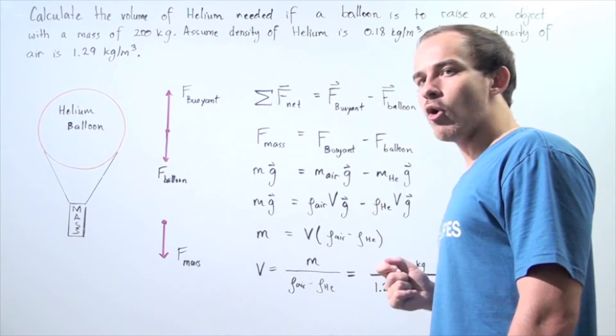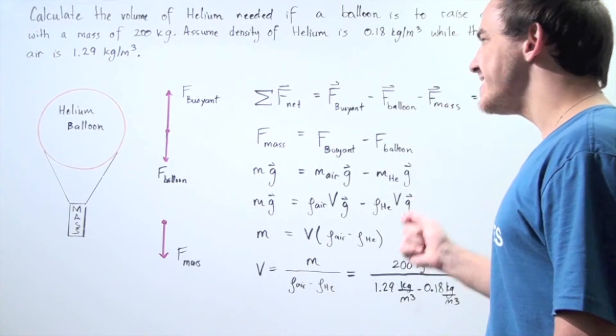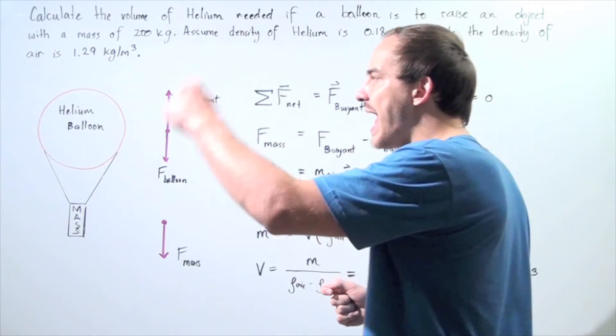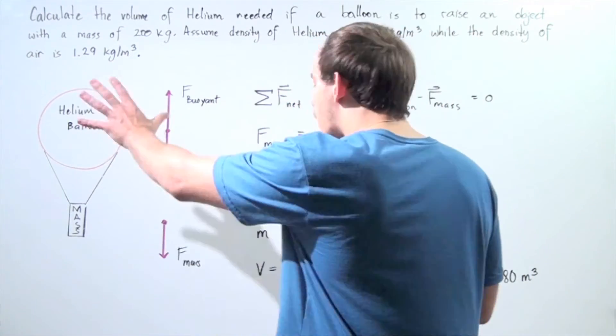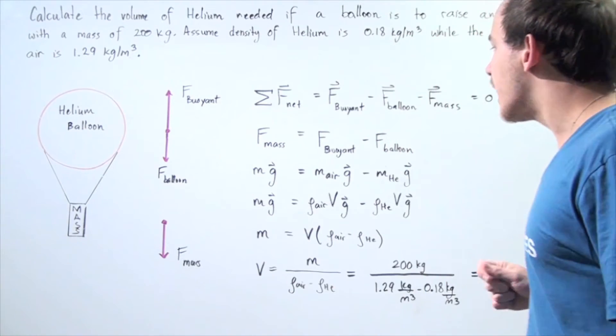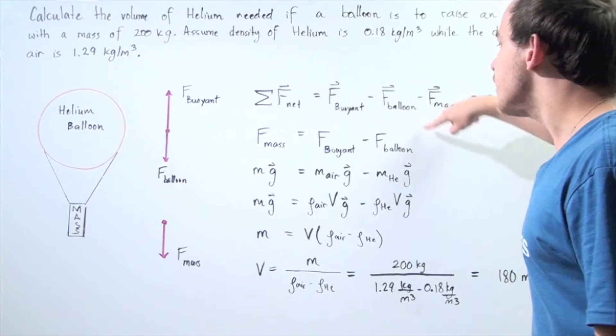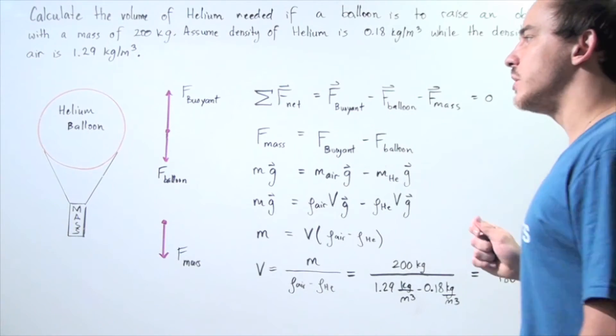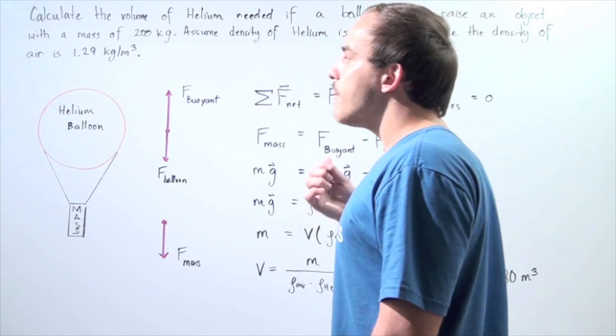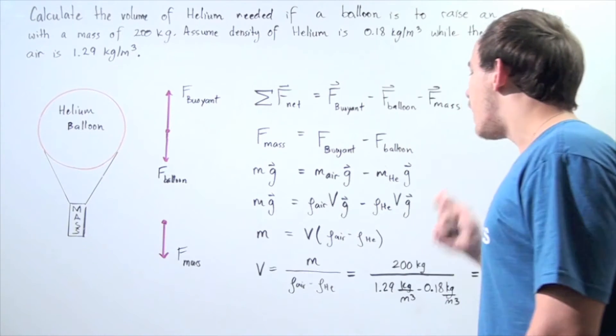Well, the buoyant force is simply the mass of the air that is displaced by the balloon multiplied by g, our gravitational constant. What about the force acting on the actual balloon? It's simply the mass of that balloon times g, our gravitational constant.